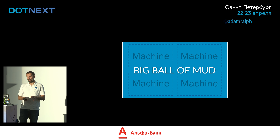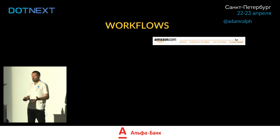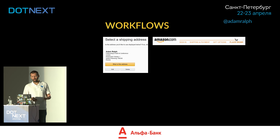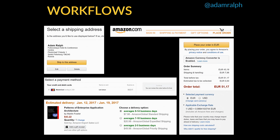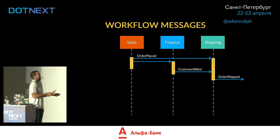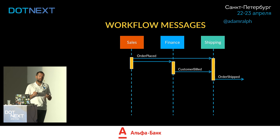Why do we end up back in that situation? Let's look at a workflow. Amazon, for instance — when you buy stuff online you go through a workflow: place your order, select a shipping address, payment method, shipping options, and eventually you place your order. Amazon's not a monolith — it's one of the most service-oriented companies in the world. There are a bunch of services collaborating to make this happen, and the important thing is they don't share data. They're loosely coupled.